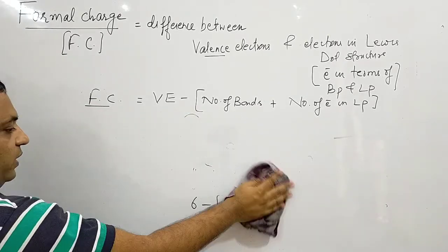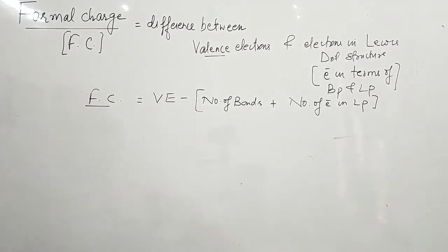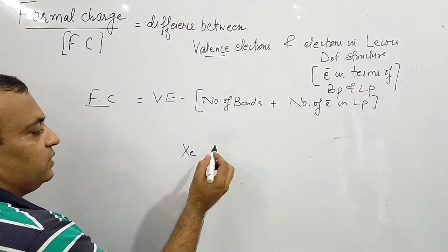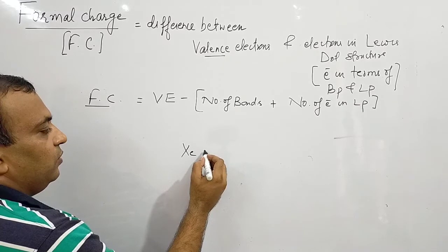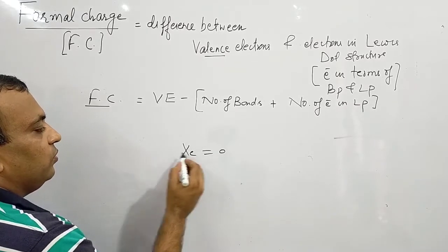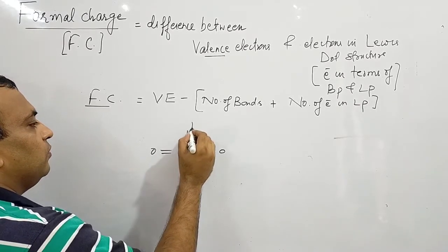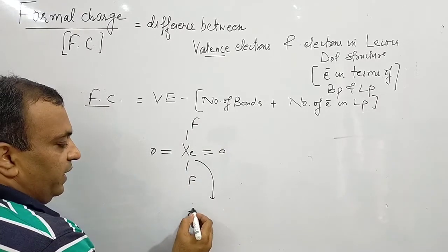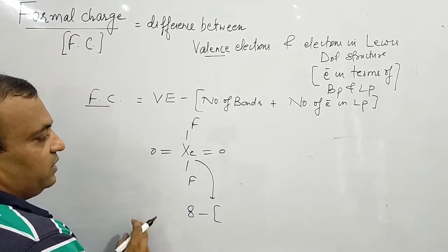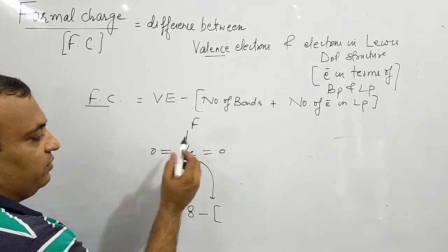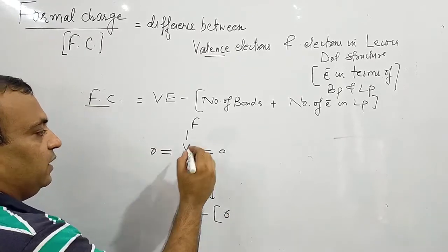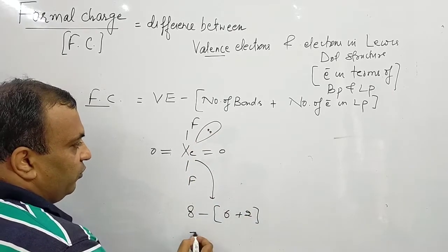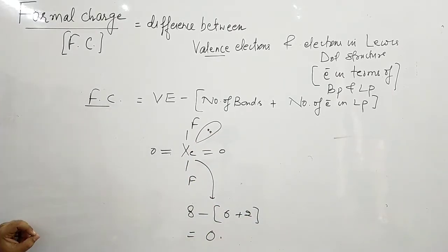Now we will calculate the formal charge on xenon in the structure XeO2F2. Xenon has 8 valence electrons minus 6 bonds plus 2 electrons in lone pair. Again the formal charge comes out to be 0.